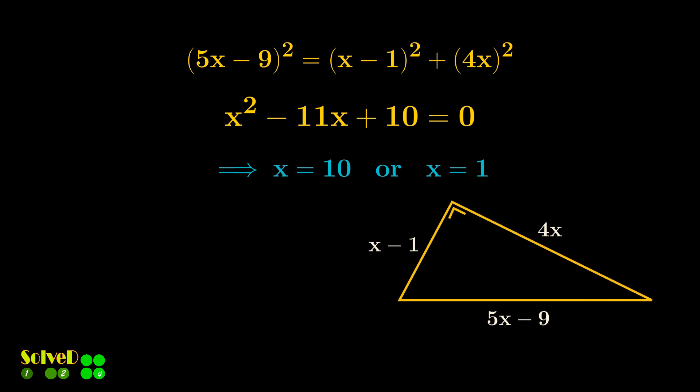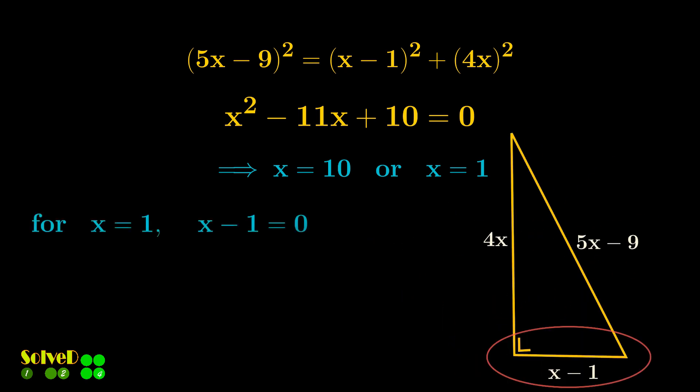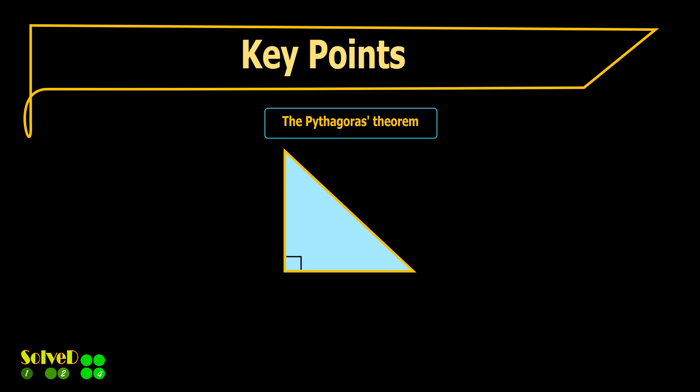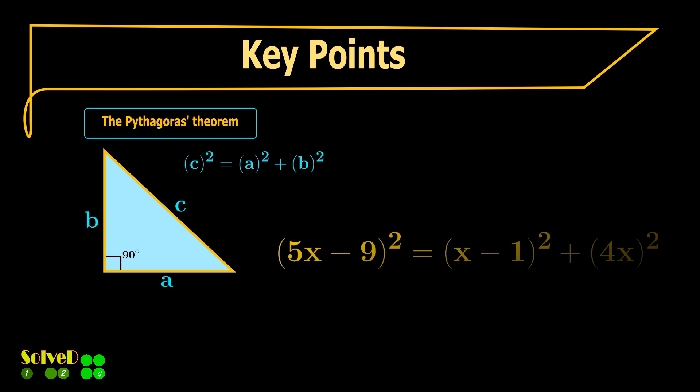Note, that for x equals 1, the side of the triangle, that is x minus 1, becomes 0. Therefore, the final solution for the given problem is x equals 10.